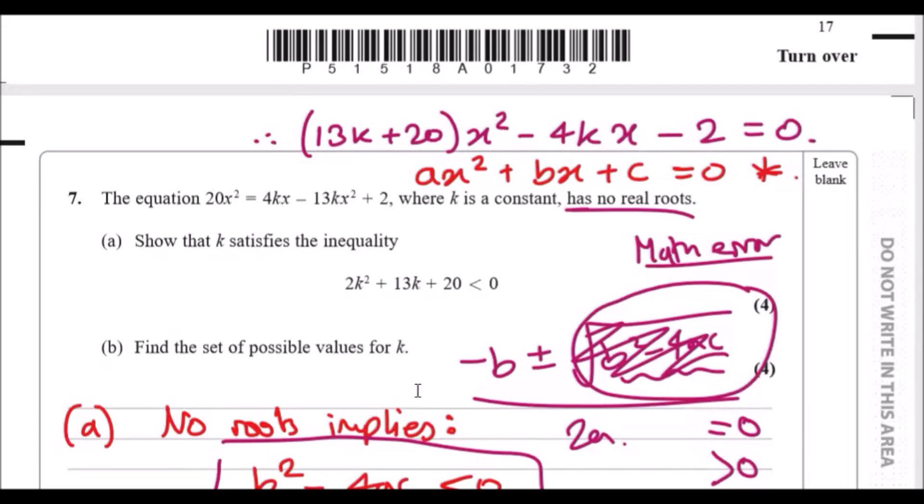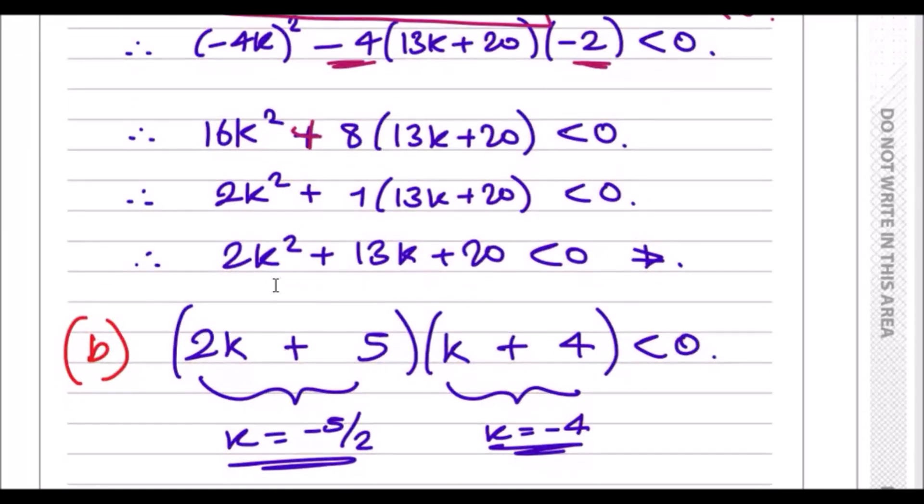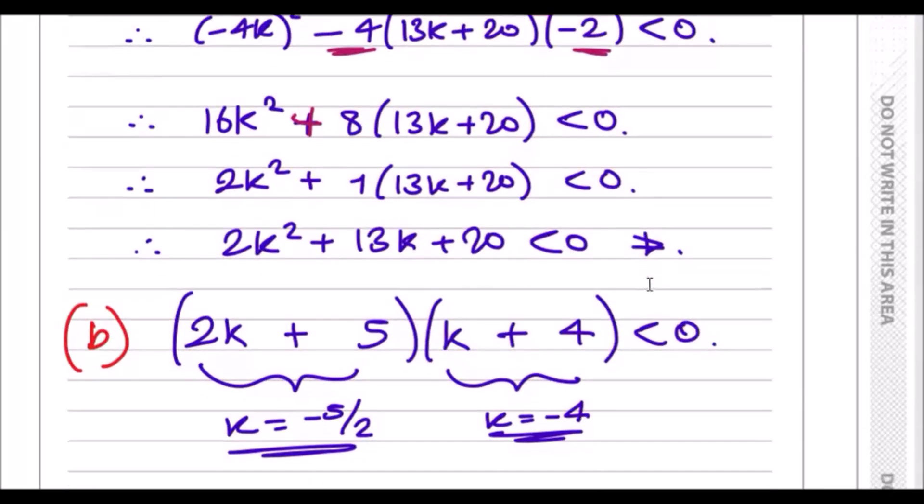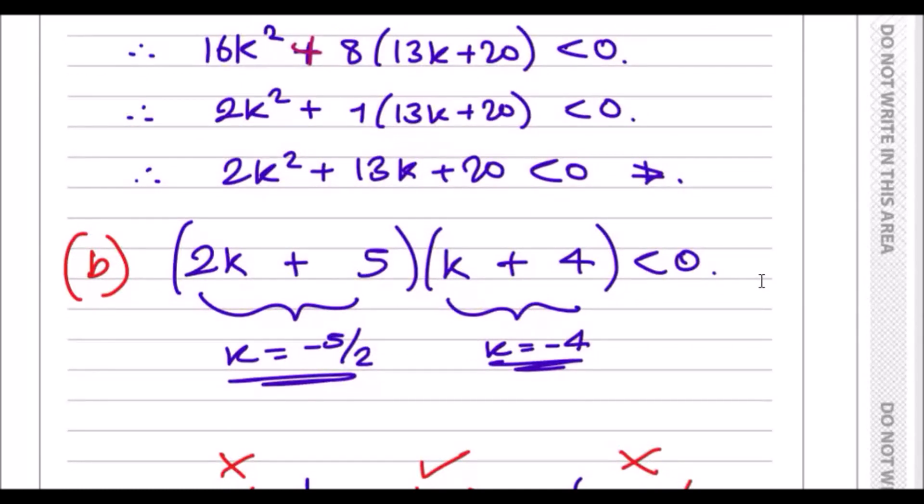Now for part (b), it says find the set of possible values for k. This means just literally factorize this expression here. I've already done it, but to understand how to get this using factorizing, let's pretend you didn't know it was 5 and 4 for a second. The key idea is to always realize that we need two numbers that multiply to make 20, so the two pairs could be, for example, 1 and 20, 2 and 10, or 4 and 5.